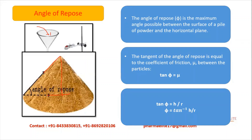How do we get tan theta = h/r? Tan theta is opposite upon adjacent. The opposite side is the height of the heap and the adjacent side is the radius. So tan theta equals h by r, and therefore theta is tan inverse of h by r. In this way we get the angle of repose in degrees.